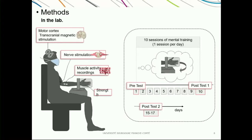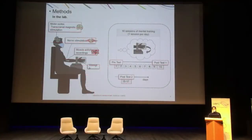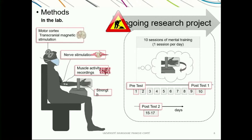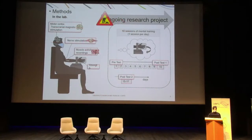We also test the participants between 15 and 17 days after day one in order to see if the changes induced by mental practice last over a longer period of time. This is an ongoing project, and we have been slowed down in recent months due to the coronavirus situation, so we are actively recruiting new participants. For now, I can tell you that there is a strength increase of about 30% when compared to a control group with no mental training, and it seems that all the changes are within the brain — within the primary motor cortex and also within the corticospinal excitability.